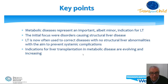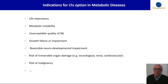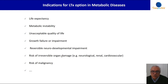Which are the indications for liver transplantation in metabolic disease? Life expectancy, metabolic instability, burden of disease in terms of quality of life, growth failure or impairment, reversible neurodevelopmental impairment, risk of irreversible organ damage — in particular neurological, renal, and cardiovascular — risk of malignancy, and probably many others.